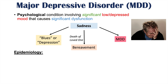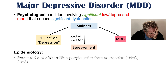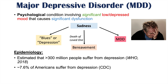The epidemiology of major depressive disorder reveals that it is a very common condition. Greater than 300 million people suffer from depression, and it's been estimated that approximately 7.6% of Americans suffer from depression. Females are more likely to suffer from depression — the female-to-male ratio is 2 to 1, so for every one male that suffers from depression, two females will suffer from depression.